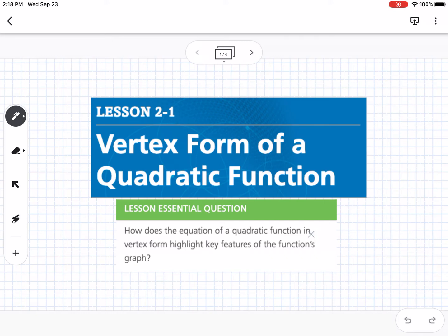Okay, so this is lesson 2-1, which is vertex form of a quadratic function. Our essential question is how does the equation of a quadratic function in vertex form highlight key features of the function's graph?